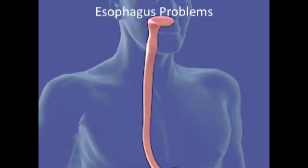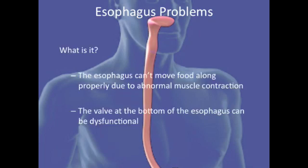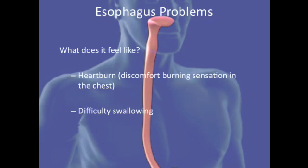Problems of the esophagus occur when it is not able to move food along properly due to reduced muscle contraction. The valve at the bottom of the esophagus, called the sphincter, can also be dysfunctional. People affected will experience heartburn, which is a burning sensation in the chest caused by acid reflux into the esophagus. Secondly, people with diabetes can have difficulty swallowing due to nerve damage of the muscles in the esophagus.